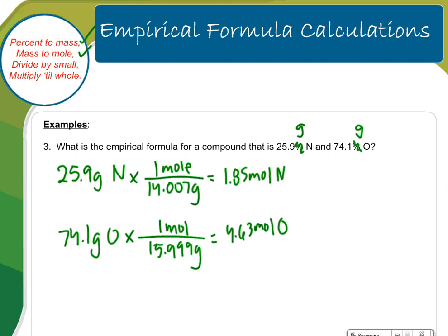Now I need to divide by small. The smaller number is 1.85. So I get a 1 for nitrogen and I get 2.5 for oxygen. So this is the divide by small step. Well, this time I have a decimal. That's not a whole number. 2.5 is not whole. So I need to multiply till whole.